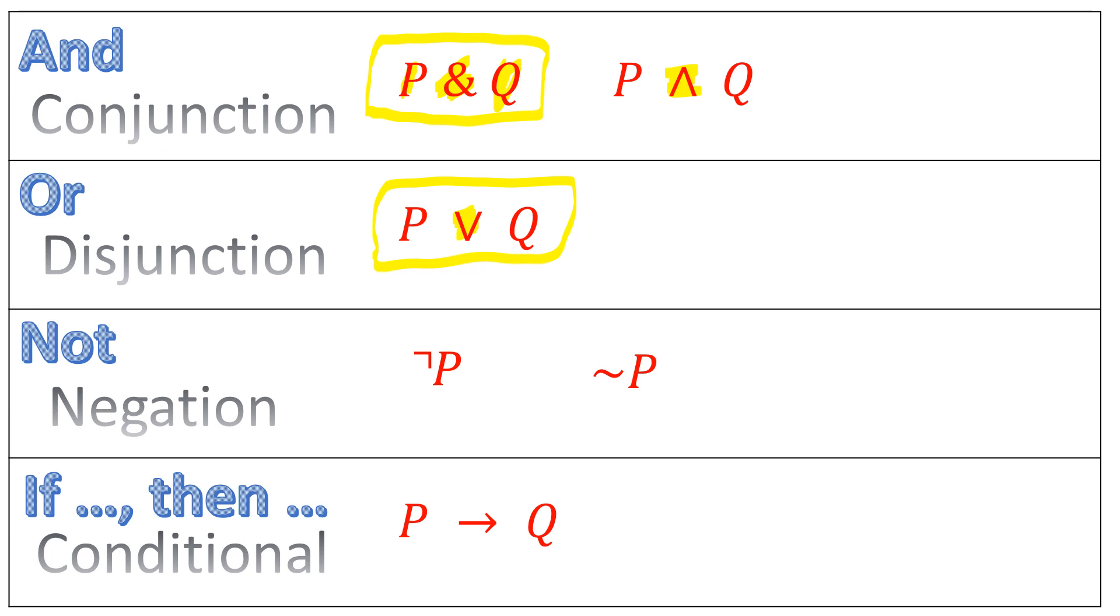There's really three possibilities with an or in mathematical logic. P, Q, or both P and Q.